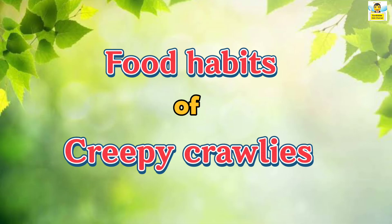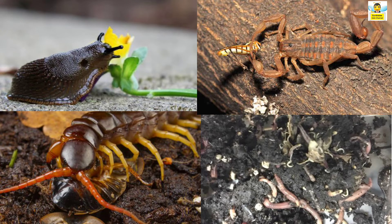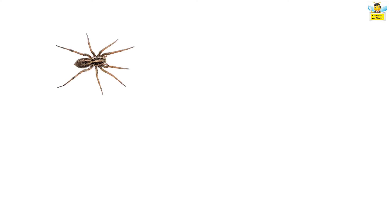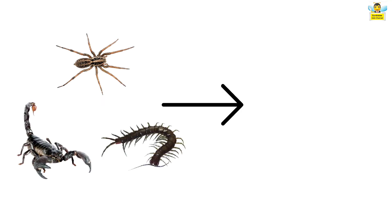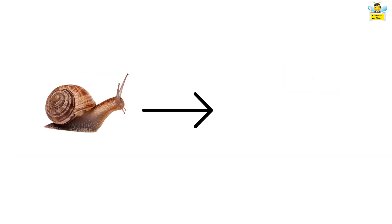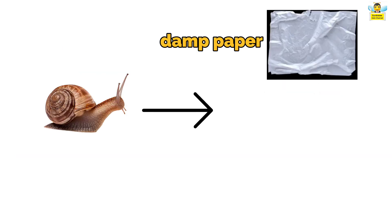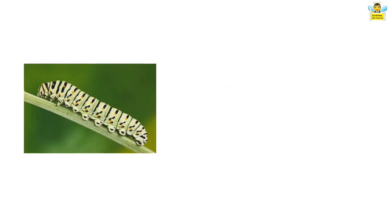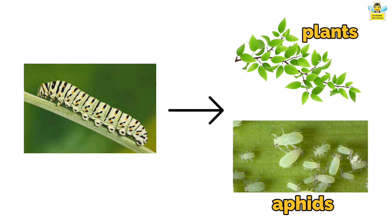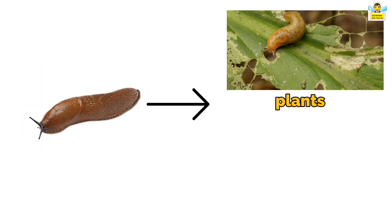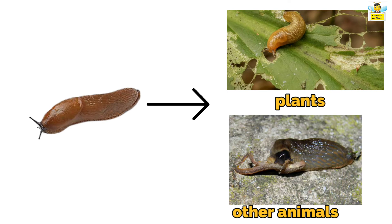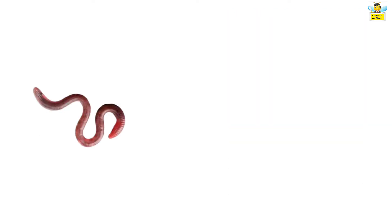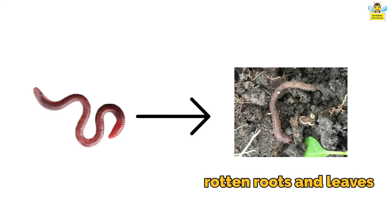Food habits of creepy crawlies: different creepy crawlies eat different things. Spiders, scorpions and centipedes eat insects. Snails eat damp paper, cardboard and algae. Caterpillars eat plants and aphids. Slugs eat waste from plants and other animals. Earthworms eat rotten roots and leaves.